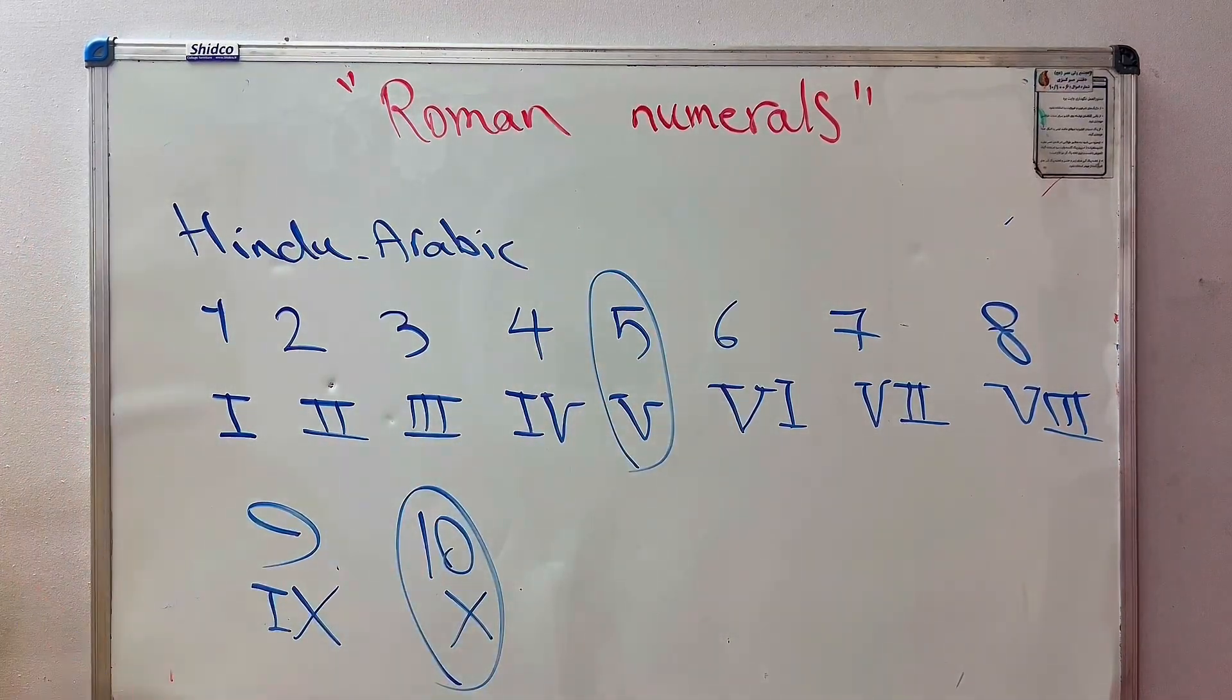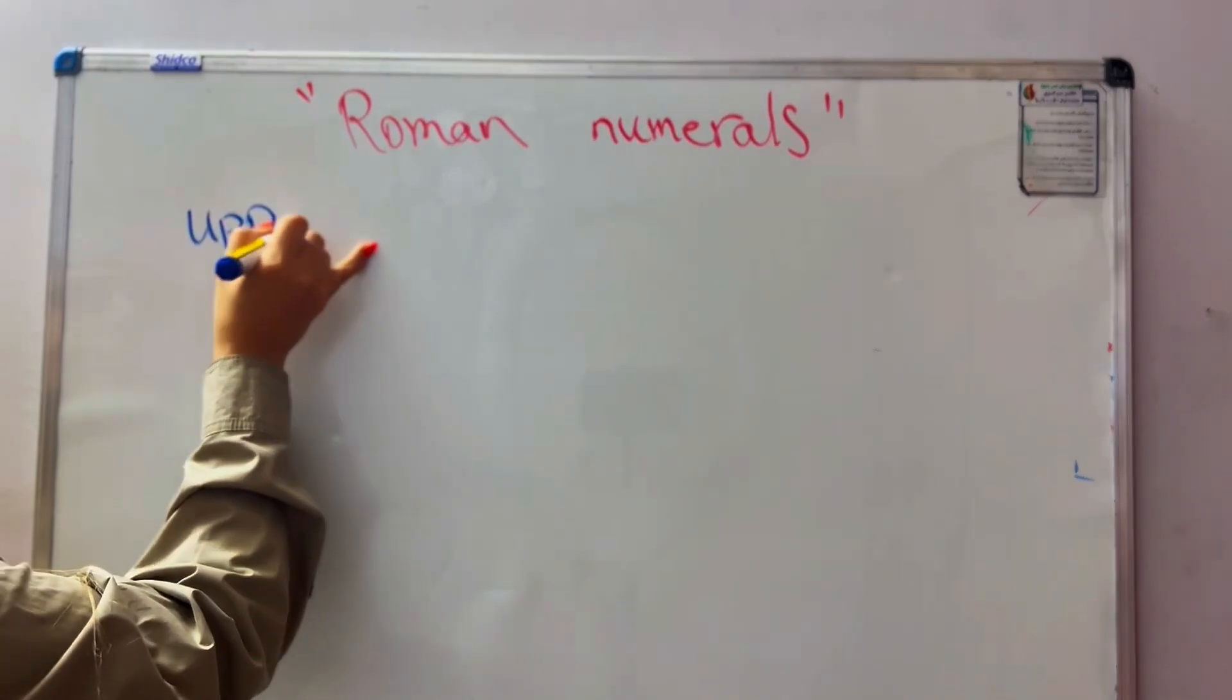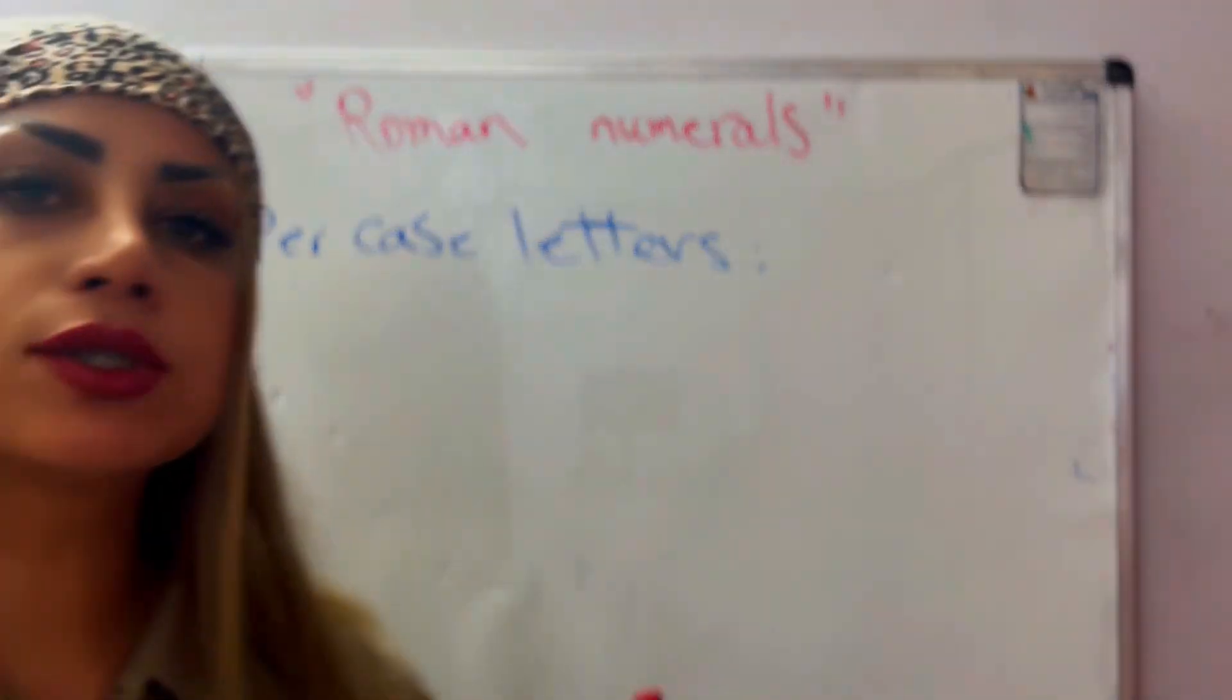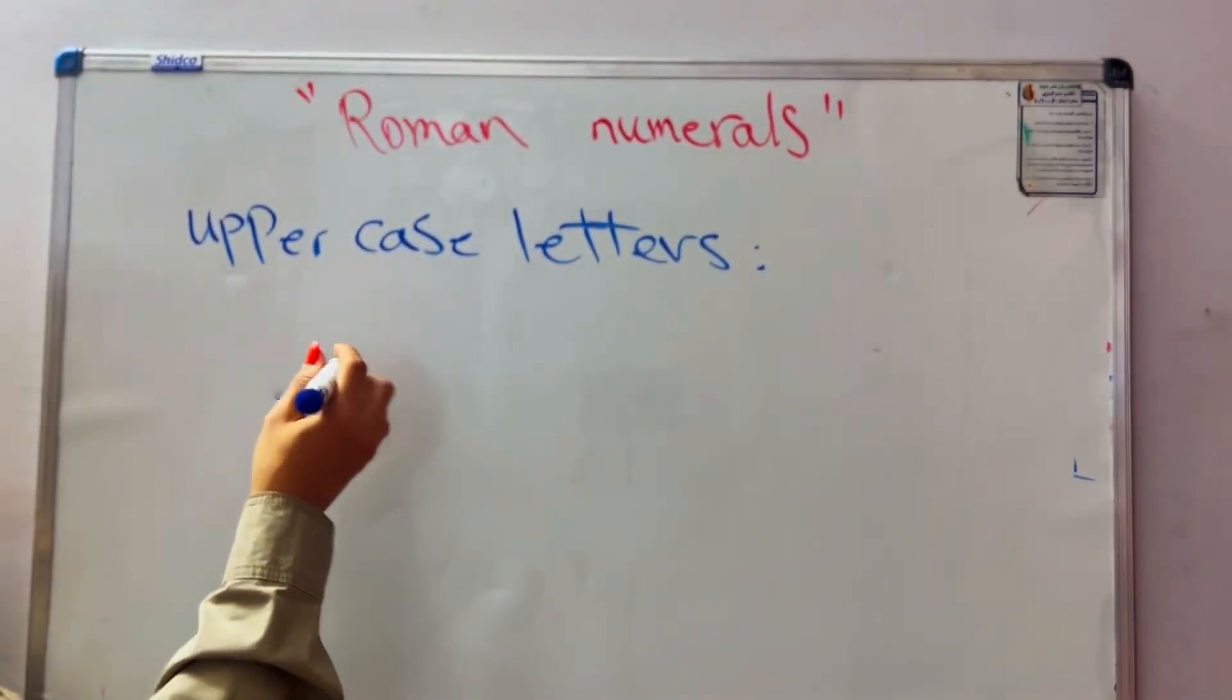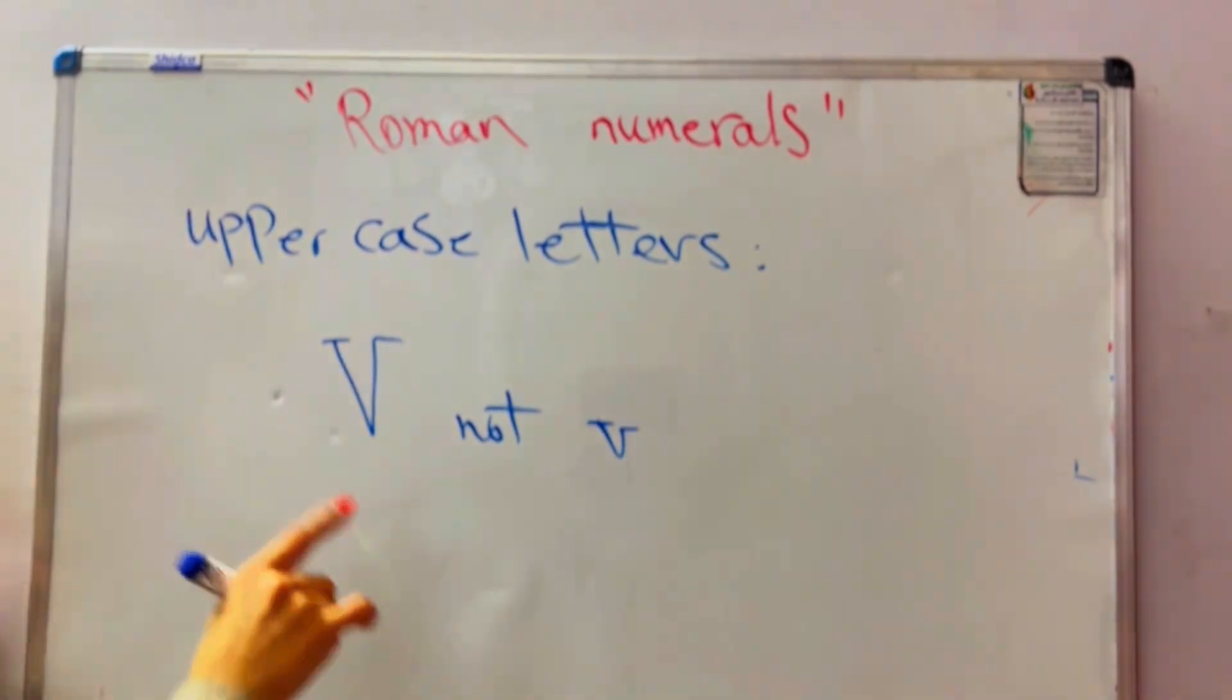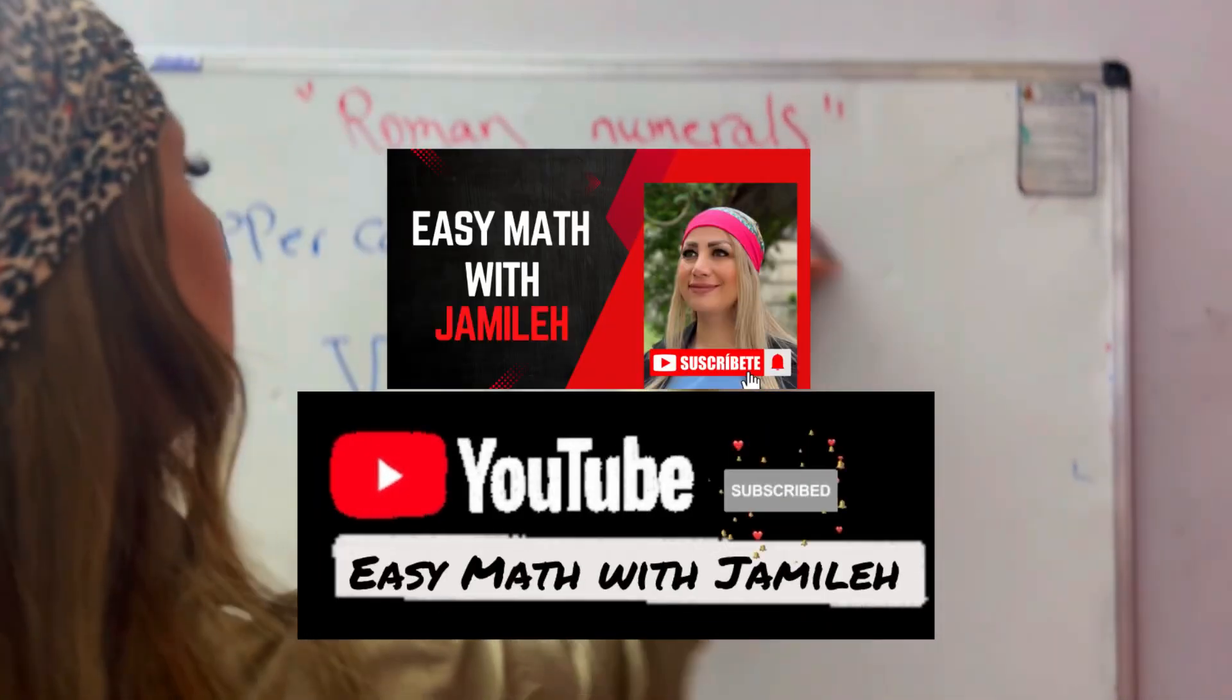We have some rules for writing and reading Roman numerals. Rule number one is uppercase letters. Roman numerals are always written with capital letters. We would use this V, not this one. We don't use lowercase letters, we use uppercase letters.